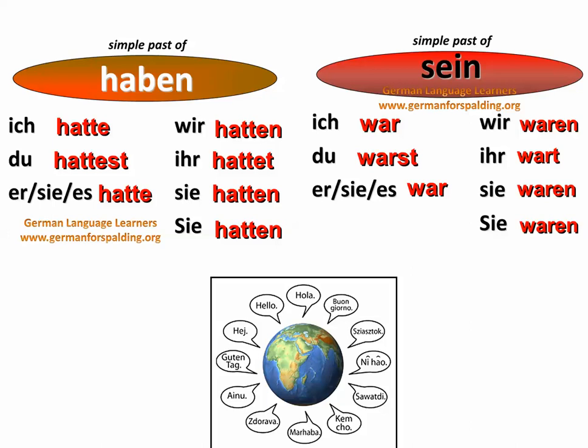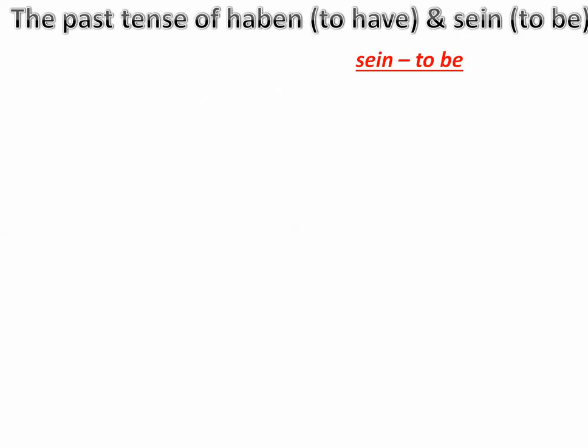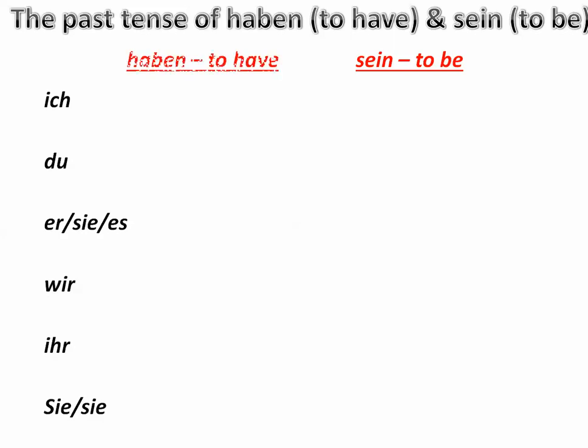Guten Tag alle, Herr Wallis here. Today we're going to work a little bit with the past — simple past forms of Haben und Sein, and also the simple past forms of regular verbs and how to form those. And we're also going to look a little bit at coordinating and subordinating conjunctions, particularly the subordinating conjunctions Dass und Weil.